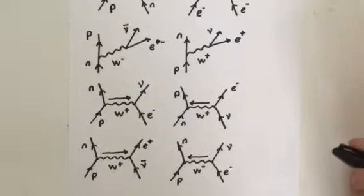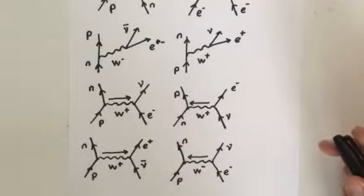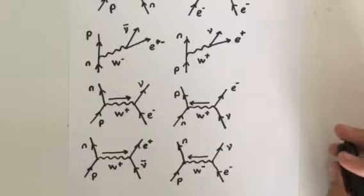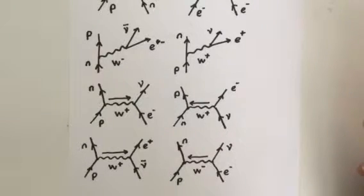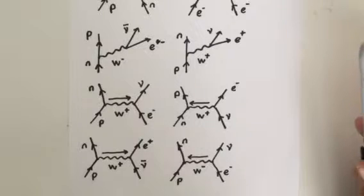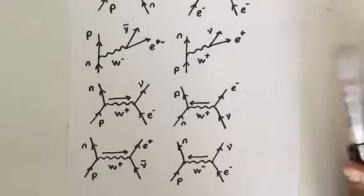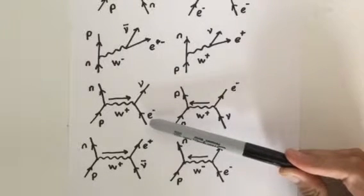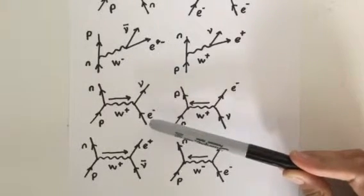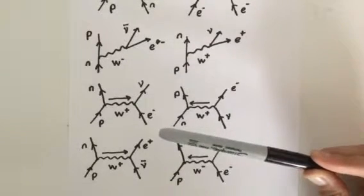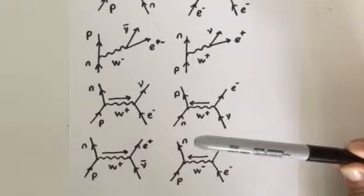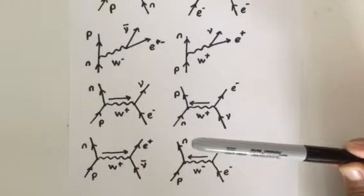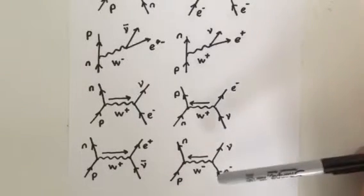The aspect of Feynman diagrams that students often struggle with is labelling the exchange particle and the direction to draw it. Look at what you start with. If a positive particle becomes neutral, you can think of it as throwing away its positive charge, so the boson will be positive. This is the case in electron capture, like we have here. If a positive particle becomes neutral by gaining negative to neutralise it, the boson will be negative. This is the case in electron-proton collision, like we have here.